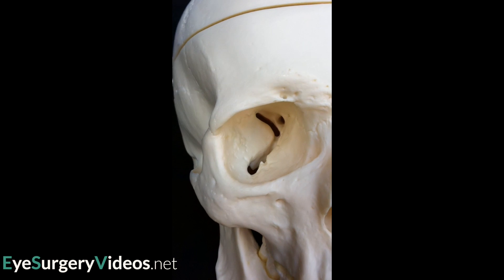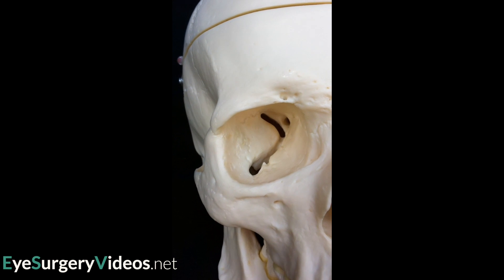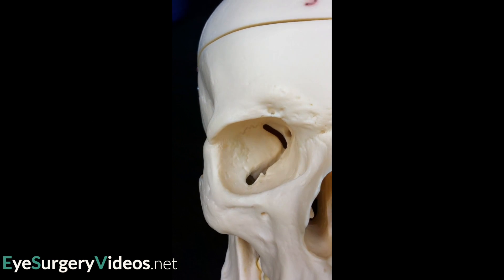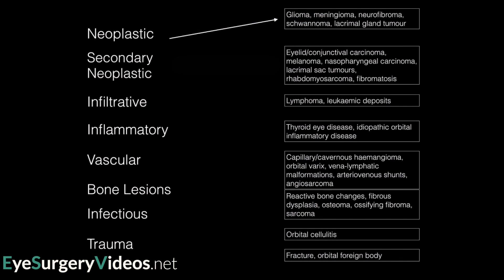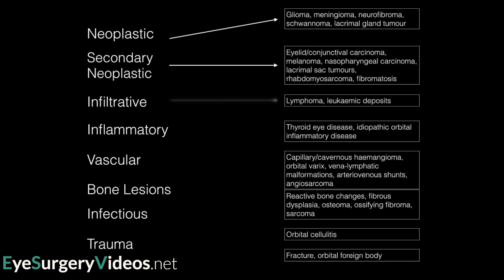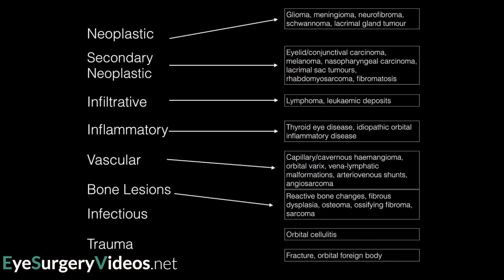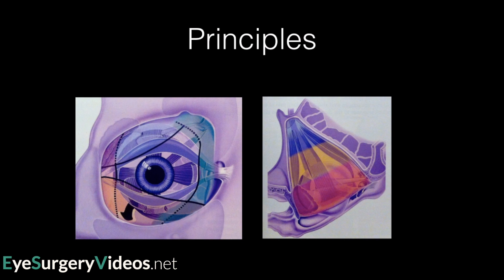The Orbit is a complex and delicate anatomical region that can house a vast array of pathology, ranging from primary and secondary neoplastic lesions to inflammatory processes due to vascular and bony lesions. The overarching principles in accessing the Orbit relate to the quadratic location of a lesion and the overlapping surgical spaces that exist, as well as the anterior posterior dimensions of the Orbit, as it significantly affects the approach that one takes.